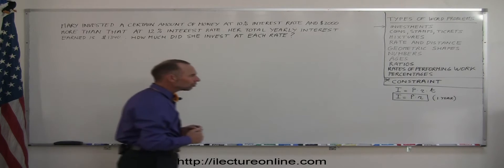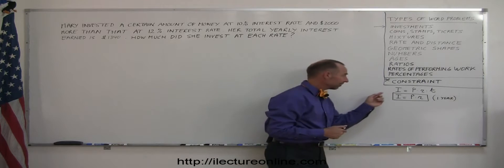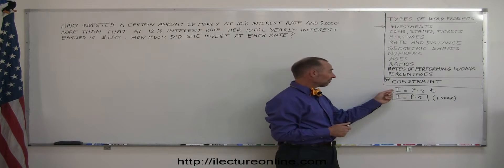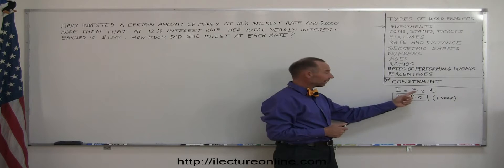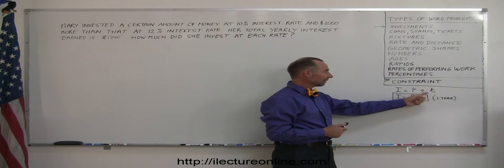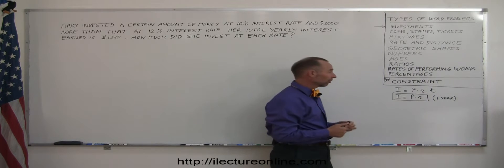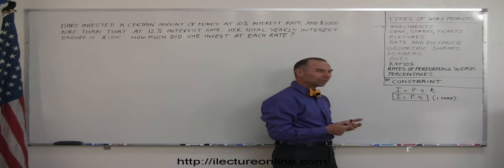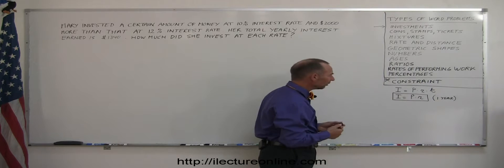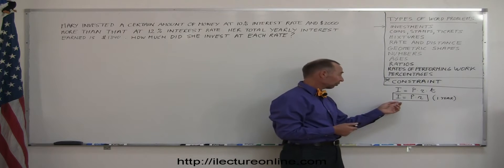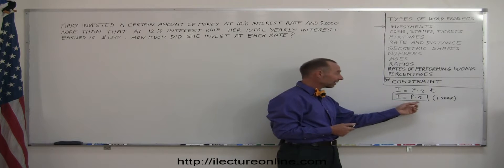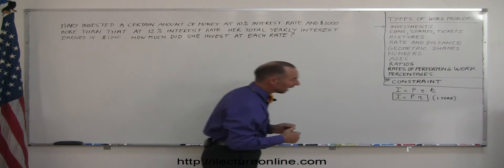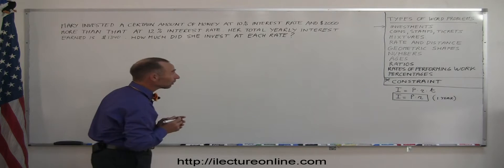One thing we should know before we get started is that the amount of interest you can earn on investment is equal to the principal times the rate at which you invested at times the time, the number of years you invested for. In algebra we usually let t equal one year, so it becomes simply the interest earned equals the principal invested times the interest rate. We'll be using this equation in this problem.